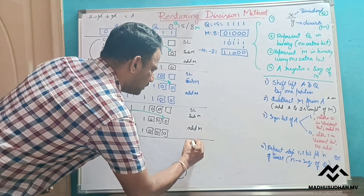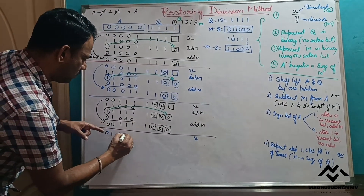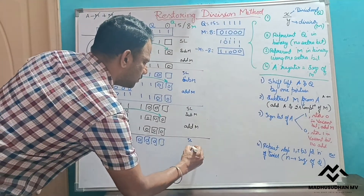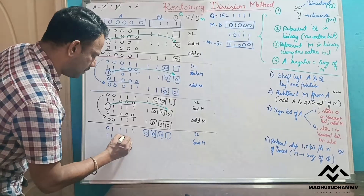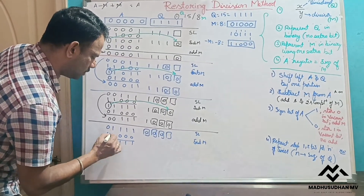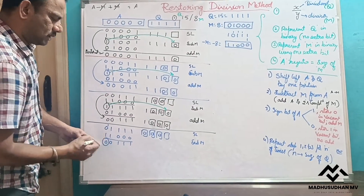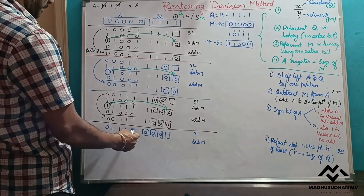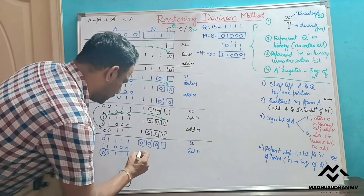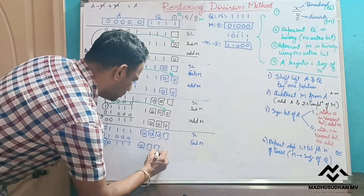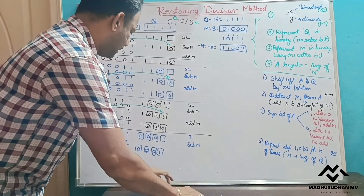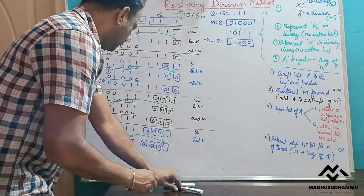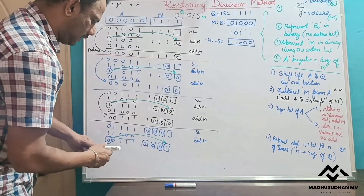Iteration 4 (final): Shift left A and Q by one position — last bit of Q is vacant. Subtract M by adding two's complement (11000). The result is 11100. Now the sign bit is zero. Since the sign bit is zero, store one in the vacant bit and do not add M. This is the only case in this example where sign bit is zero, so we store one and leave A as is.